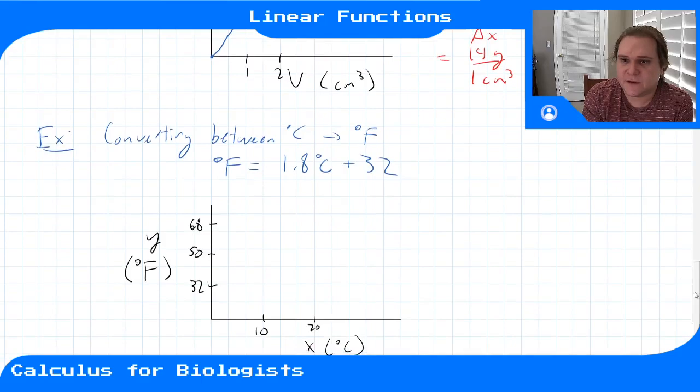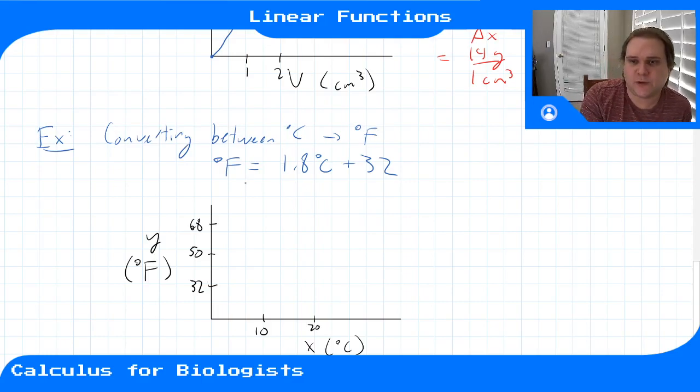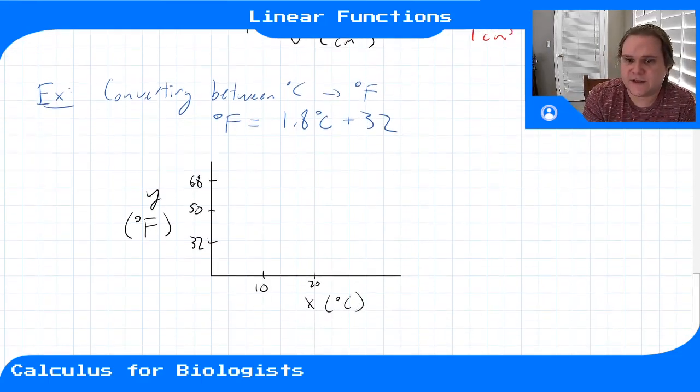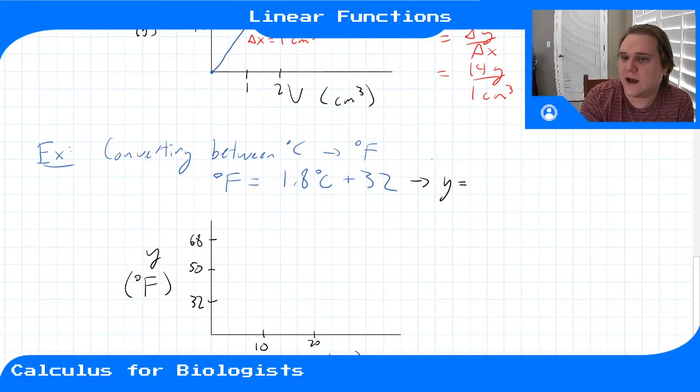Let's do one last example where we're converting between units again, but these units don't share a zero, so they're not going to be completely proportional. Converting between degrees Celsius and degrees Fahrenheit, they're actually related by a linear equation. A degree of Fahrenheit is 1.8 degrees Celsius plus 32, because their zero is different. If we plot this where x is degrees Celsius and y is degrees Fahrenheit, we can say y = 1.8x + 32.